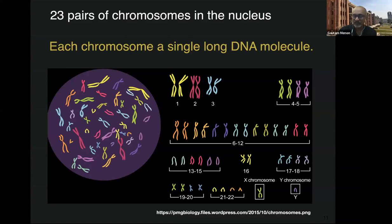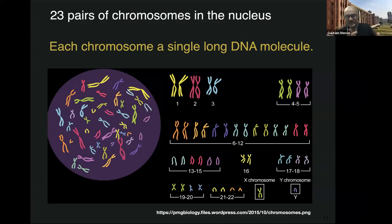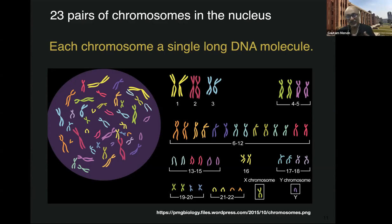There are 23 pairs of chromosomes inside the nucleus of most cells, apart from sex cells. Each chromosome is a single long DNA molecule — chromosome 1, 2, 3, roughly ordered by size, plus X and Y chromosomes. Women have two X chromosomes; men have X and Y. If you took all the DNA inside a single cell and laid it end to end, that's about 2 meters. Multiplying by the ~10 trillion cells in the adult human body, the total length would go about 80 times between the sun and the earth and back.